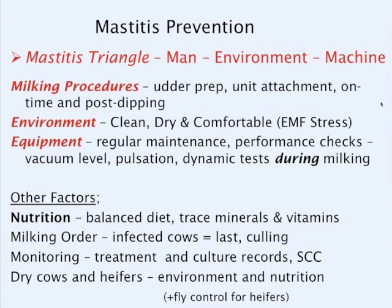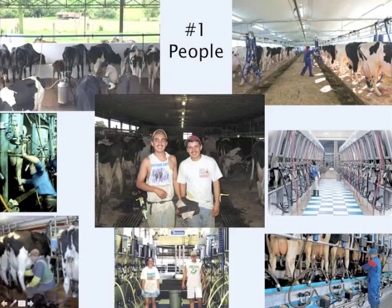Mastitis prevention comes down to three main categories in the mastitis triangle: the man (milking procedures), the environment (cleanliness and comfort), and the machine (milking equipment). Under environment: clean, dry, comfortable conditions. Electromagnetic field stress, also called stray voltage, should be ruled out in chronic high somatic cell situations. Nutrition — trace minerals and vitamins — is very important. Milking order matters, especially for Staph aureus cows, which should be milked last.